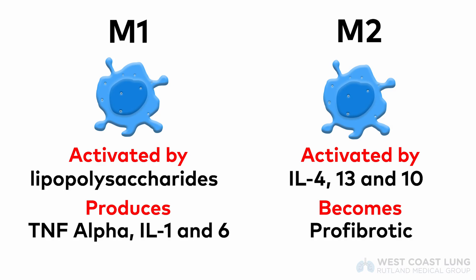When you look at the macrophage, this can be a little bit confusing, because there's M1 macrophages and there's M2 macrophages. M1 macrophages are activated by lipopolysaccharide and can produce TNF-alpha, interleukin-1, and interleukin-6, which maintain inflammation. M2 macrophages are activated by interleukin-4, interleukin-13, and interleukin-10, think type 2 inflammation and asthma, and can become profibrotic to support wound healing.